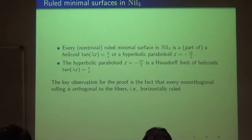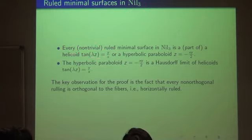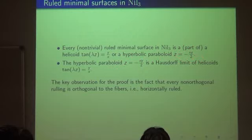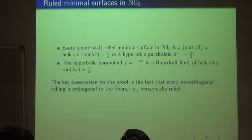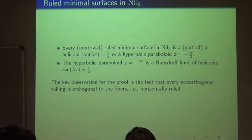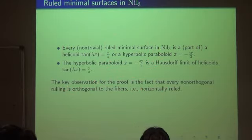In NIL-3, the only non-trivial ruled minimal surface is the helicoid. There is also a curious hyperbolic paraboloid, but it turns out to be a limit of the helicoid, so one can say that essentially the only ruled minimal surface in NIL-3 is the helicoid. The key observation in the proof is that the ruling must be orthogonal to the axis.